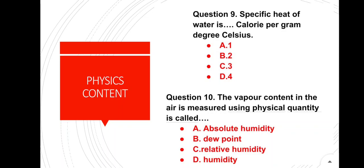Question number 9: Specific heat of water is 1 calorie per gram degree Celsius. Option A is correct. Question number 10: The vapor content in the air is measured using which physical quantity? Options: absolute humidity, dew point, relative humidity, humidity. The answer is option A — absolute humidity.